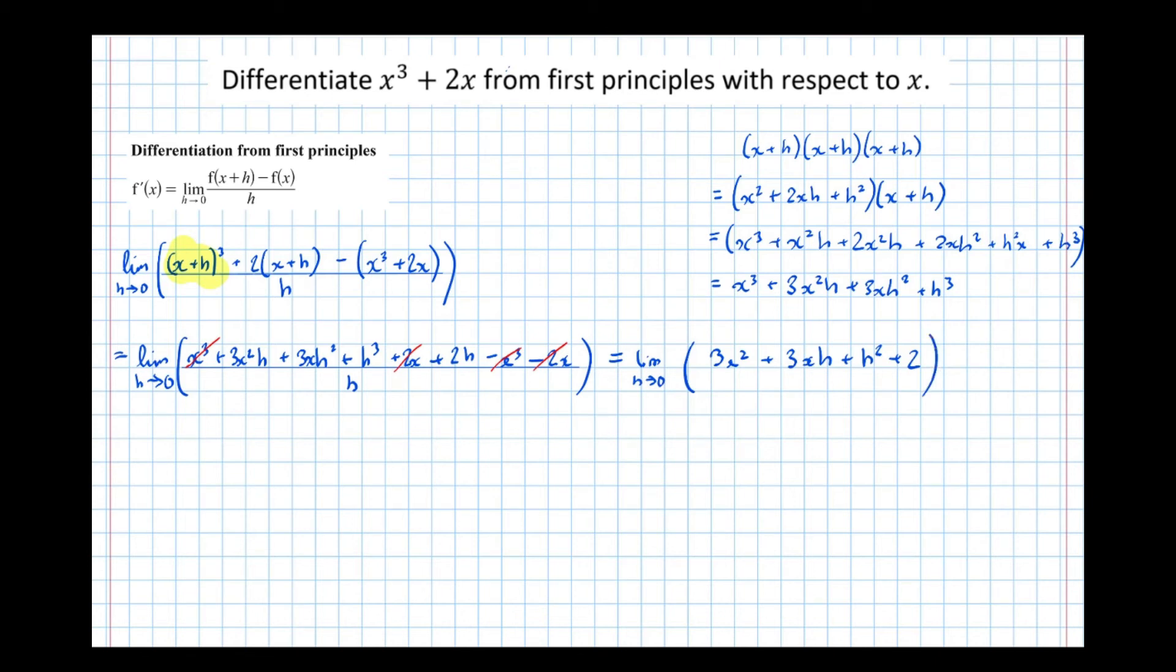So as h approaches 0, we can see that this term here has an h in it, so as h approaches 0, this term will disappear. Likewise, as h approaches 0, this term will also disappear. So therefore, we can conclude that this is equal to 3x squared plus 2.